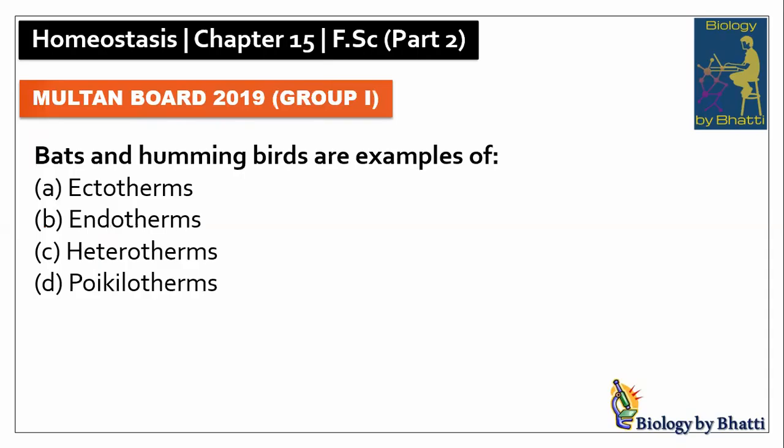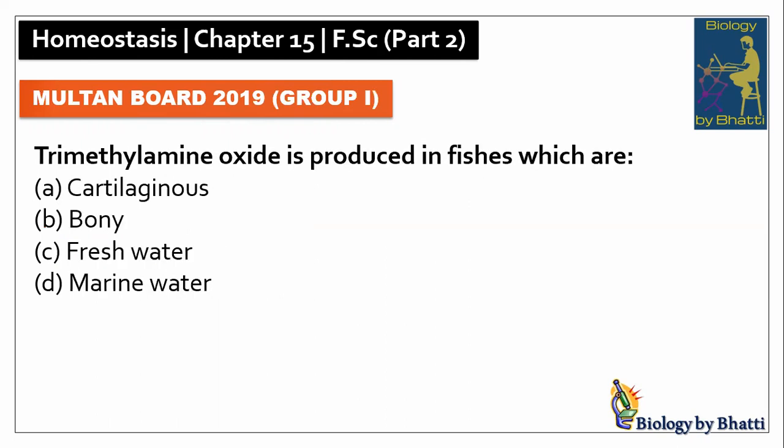Multan Board 2019 Group 1: bats and hummingbirds are examples of heterotherms, so the answer was C option. In this paper, trimethylamine oxide is produced in fishes which are cartilaginous, so the answer was A option.